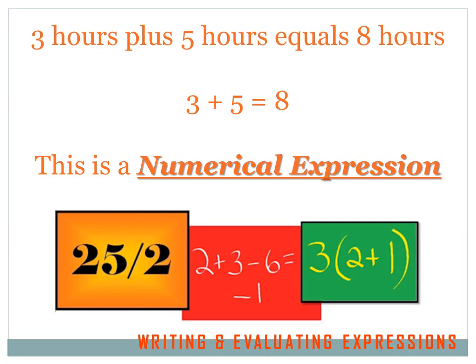Three hours plus five hours equals eight hours. Three plus five equals eight. This is called a numerical expression — there's just numbers in it.